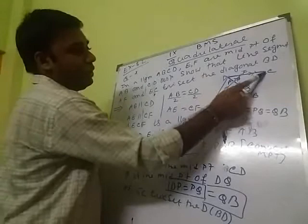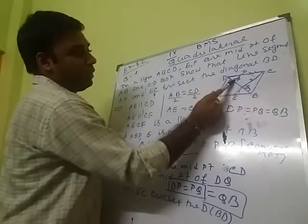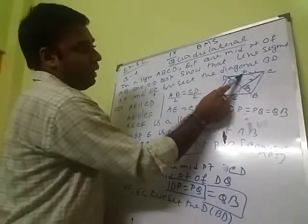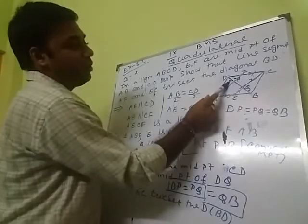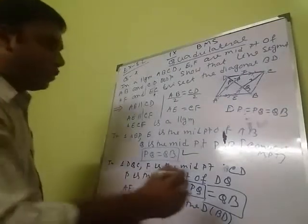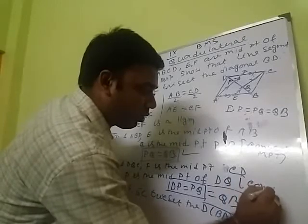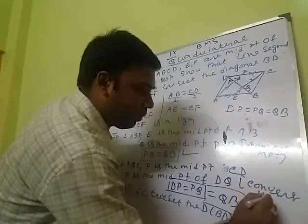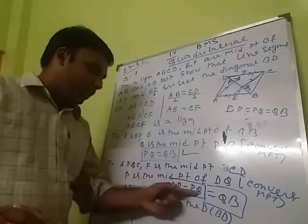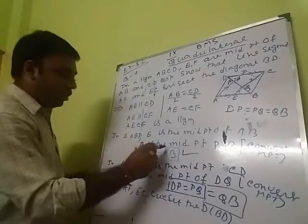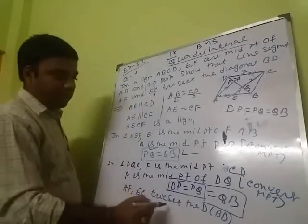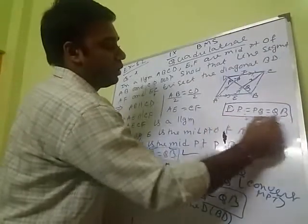Considering triangle DQC: PF is parallel to QC because of the parallel sides of parallelogram AECF, and F is the midpoint of CD. Automatically, P will be the midpoint of DQ by the converse midpoint theorem. Therefore DP equals PQ. Combined with PQ equals QB, we get DP equals PQ equals QB. This means AF and EC trisect the diagonal BD, and we have proved the statement.